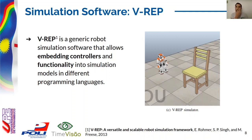VREP is a generic robot simulation software that allows embedding controllers and functionality into simulation models in different programming languages. It presents a broad models library that can be useful to develop a scene in just a few minutes, considering the environmental elements and the robot itself, being widely used in both the academic and the industrial fields.